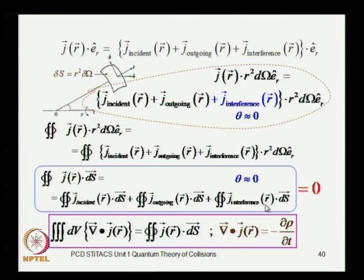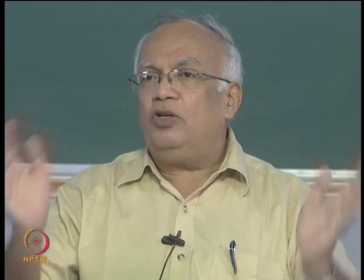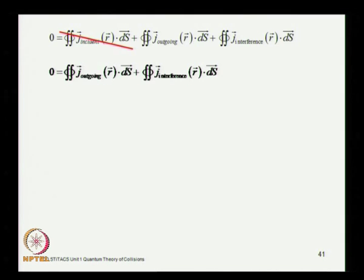The interference term is important only for small angles. These three integrals sum to 0. For the incident term: the incident plane wave enters and exits the closed surface with no net divergence — whatever comes in goes out — so the surface integral of the first term automatically goes to 0. Now you have 0 equal to the sum of the remaining two terms.